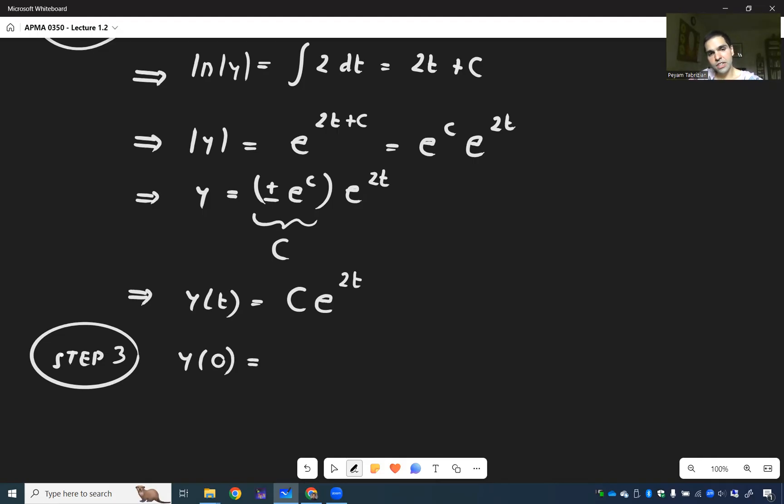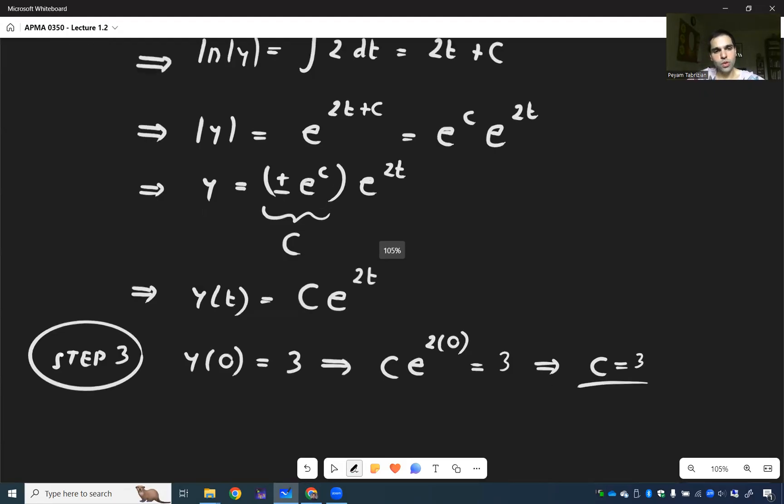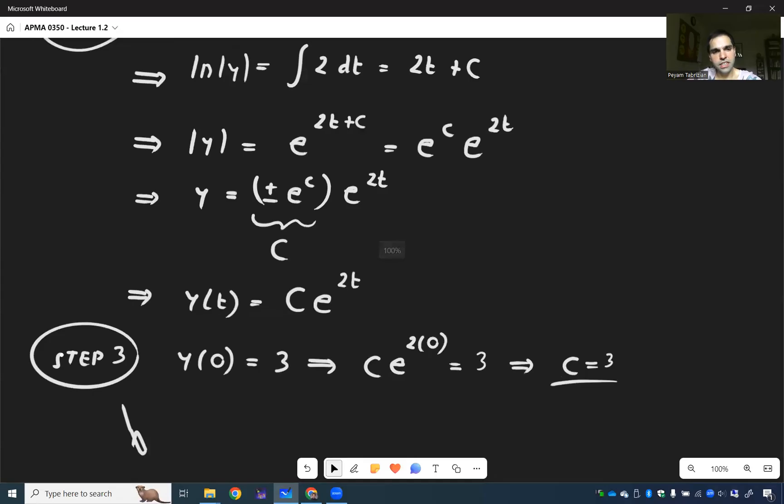So, now we have y of 0 equals 3. So, c e to the 2 times 0 equals 3. So, essentially, c equals 3. And finally, we do get our solution, y of t equals 3e to the 2t.